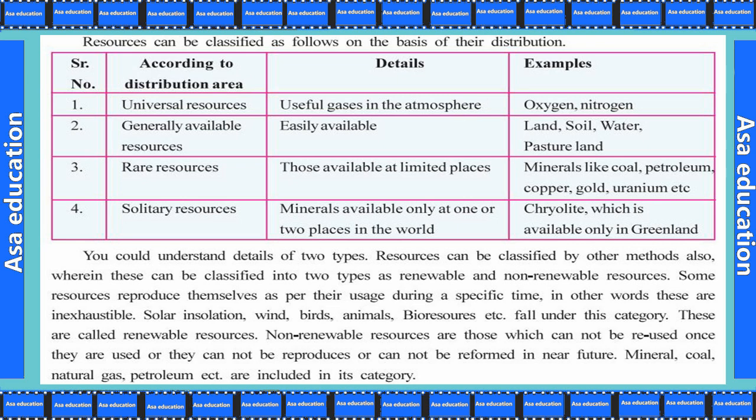On the basis of distribution: universal resources include useful gases in the atmosphere such as oxygen and nitrogen. Generally available resources are those easily accessible, such as land, soil, water, and pasture land. Rare resources are those available at limited places, such as minerals like coal, petroleum, copper, gold, and uranium. Solitary resources are found at only one or two places in the world, such as cryolite, found only in Greenland.